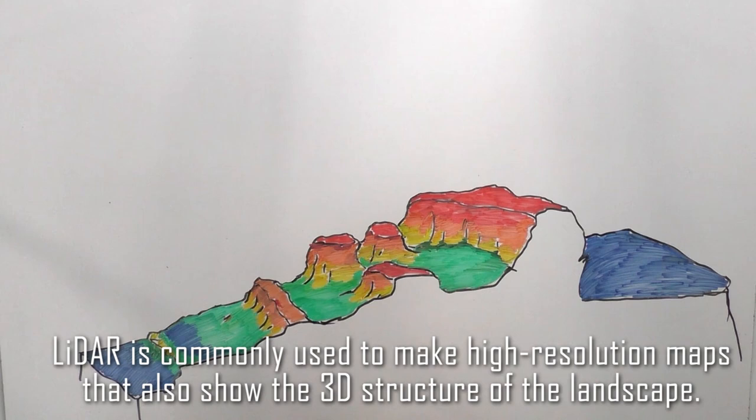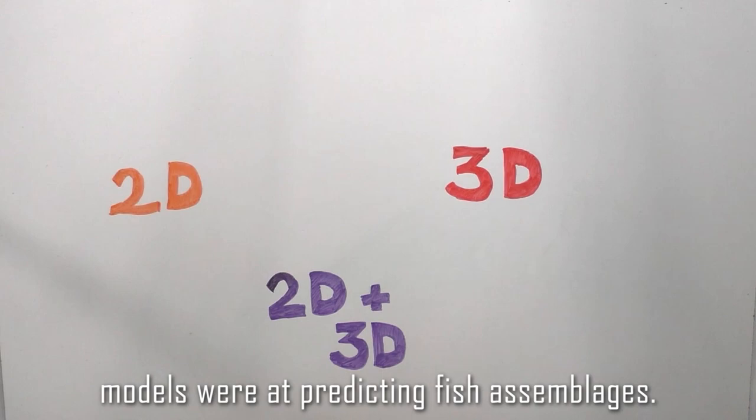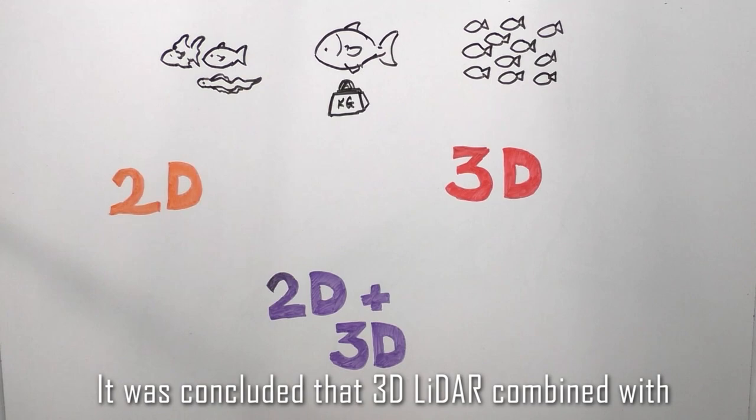LiDAR is commonly used to make high-resolution maps that also show the 3D structure of the landscape. Researchers combined these data to work out how good just 2D, just 3D, and combined 2D and 3D models were at predicting fish assemblages—that's diversity, biomass and density.